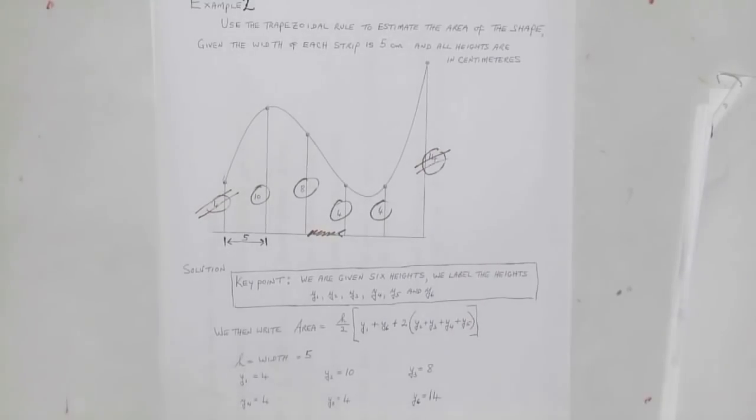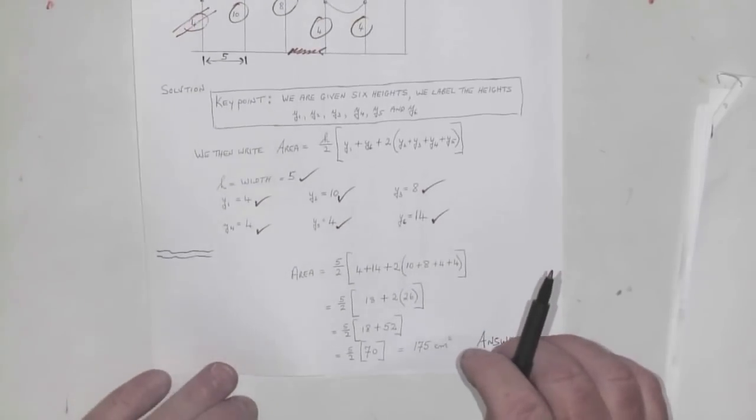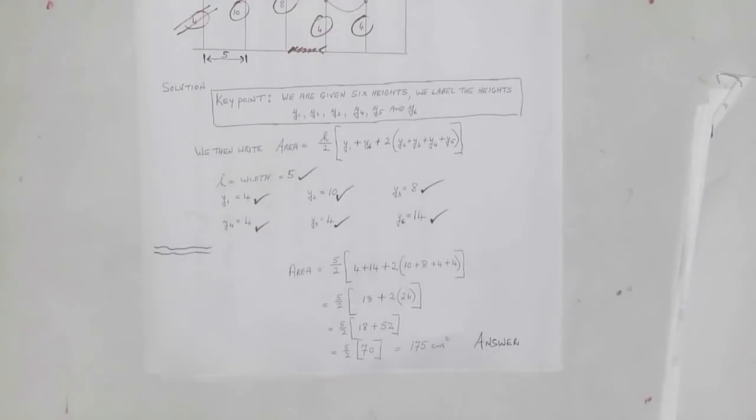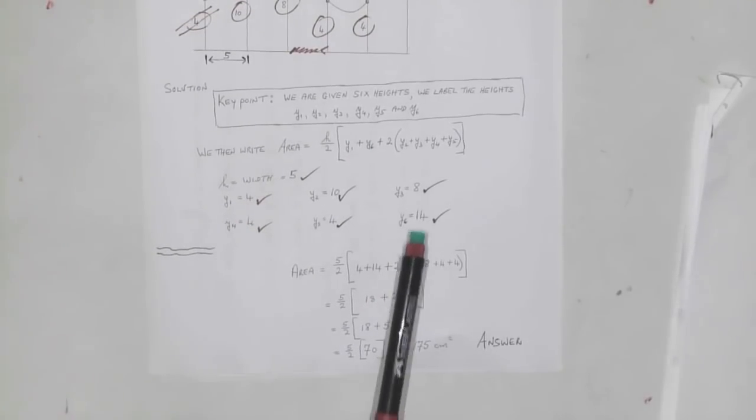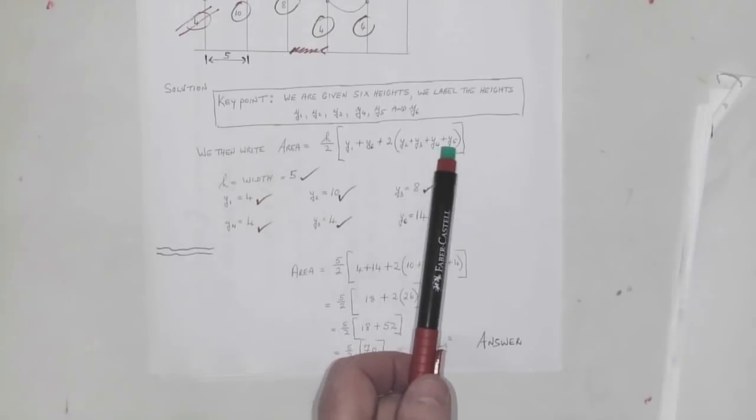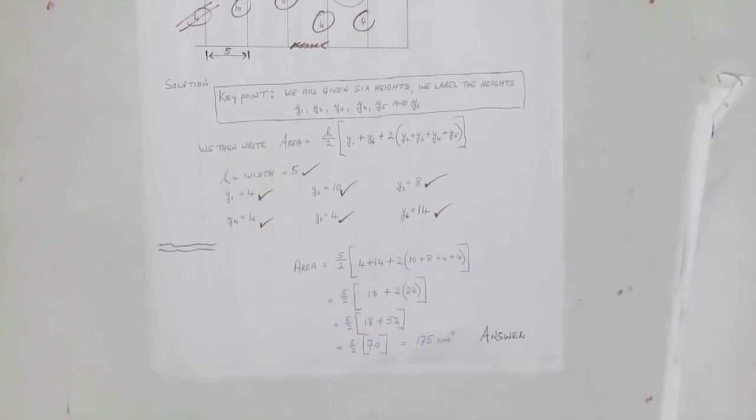The area is H over 2 times (y1 + y6) plus twice the others in between. The width is 5, y1 is 4, y2 is 10, y3 is 8, y4 is 4, y5 is 4, and y6 is 14. Filling in: 5 over 2 times (4 + 14) plus 2 times (10 + 8 + 4 + 4) gives 175 centimeters squared.